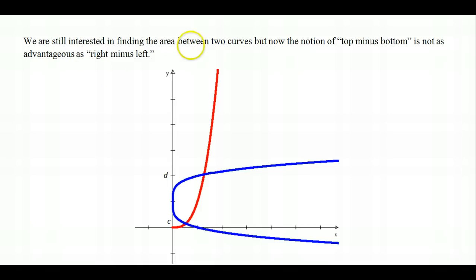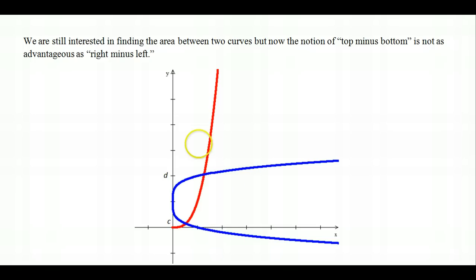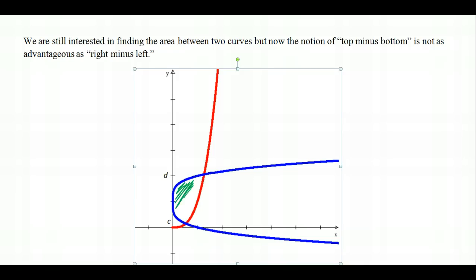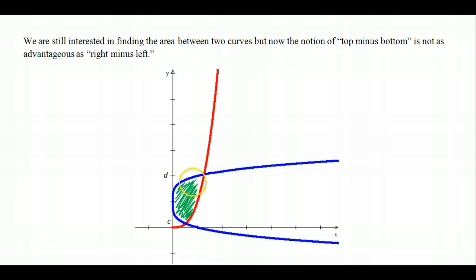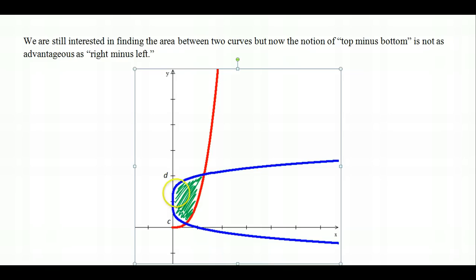In this lesson we're still interested in finding the area between two curves, but now the notion of top minus bottom is not as advantageous as right minus left. Looking at two curves: the red one is a function, but the blue graph is not — it does not pass the vertical line test. We're trying to find the area between these two curves, but the idea of top minus bottom doesn't quite work out, because the top and the bottom happen to be on the same curve.